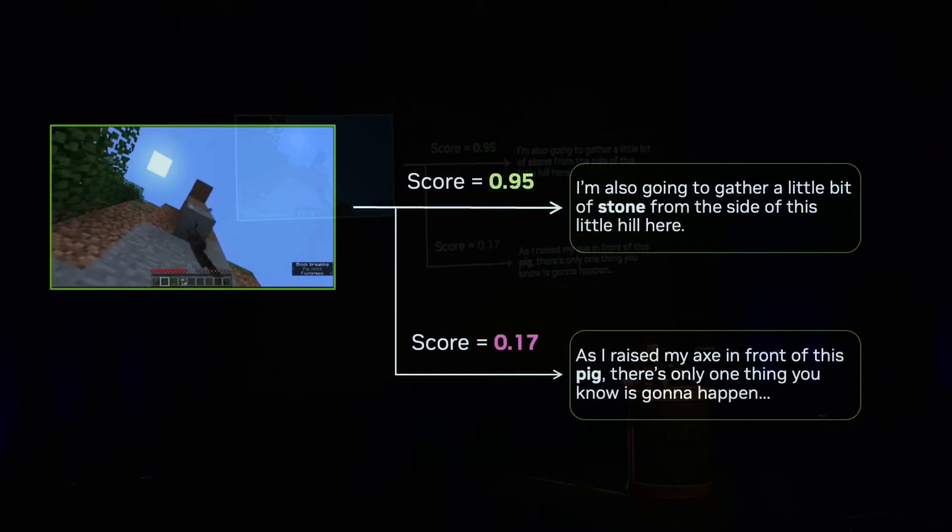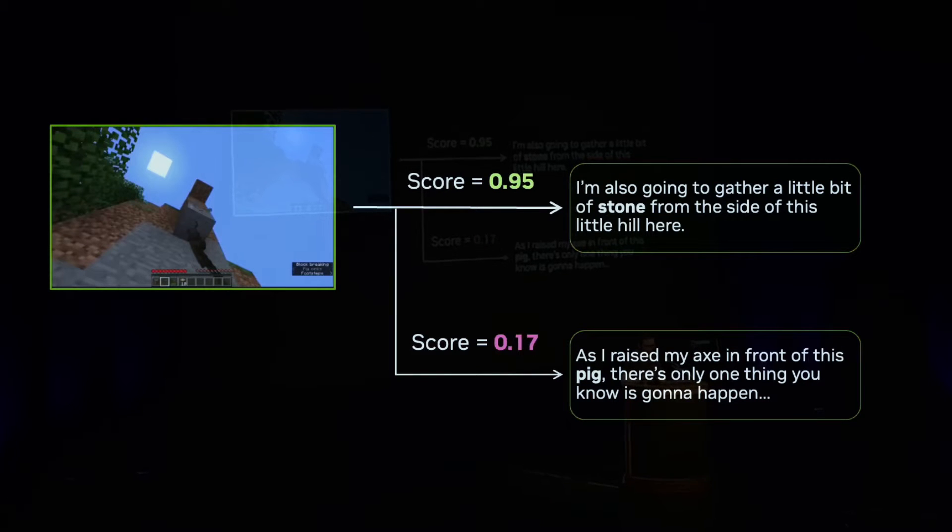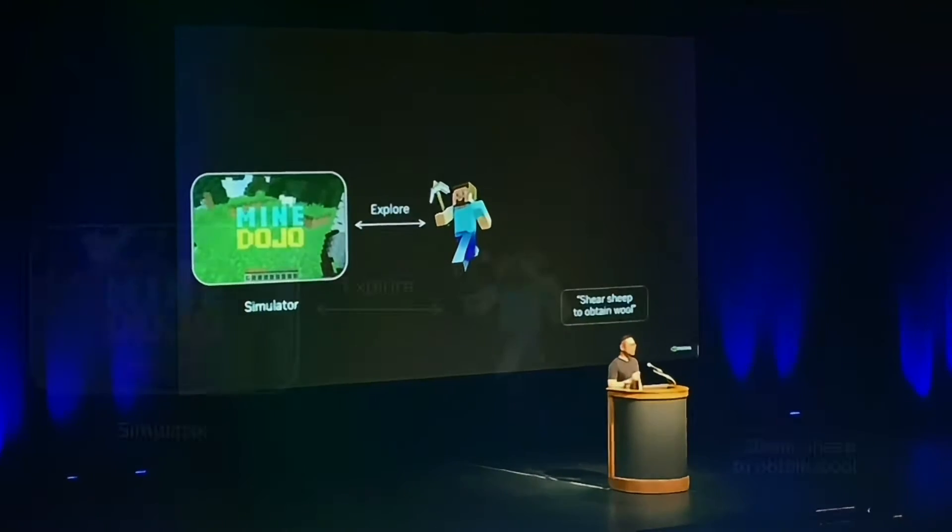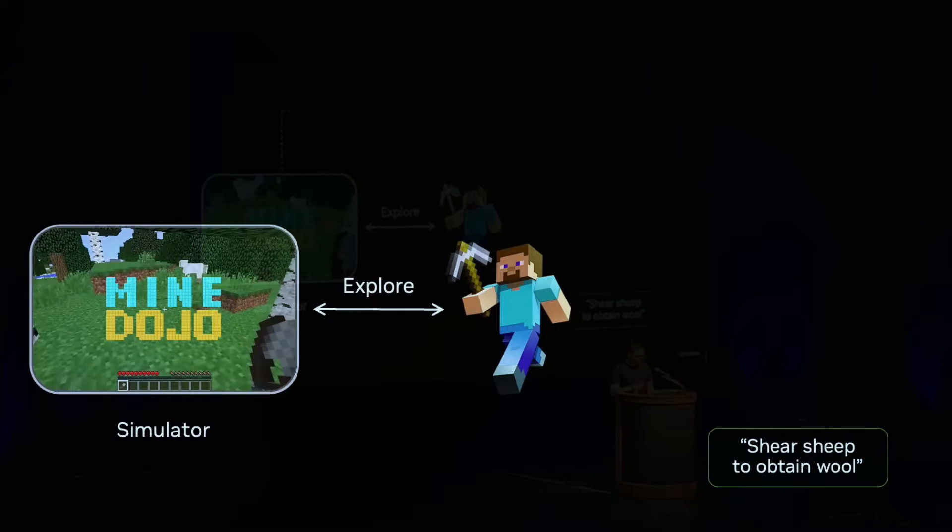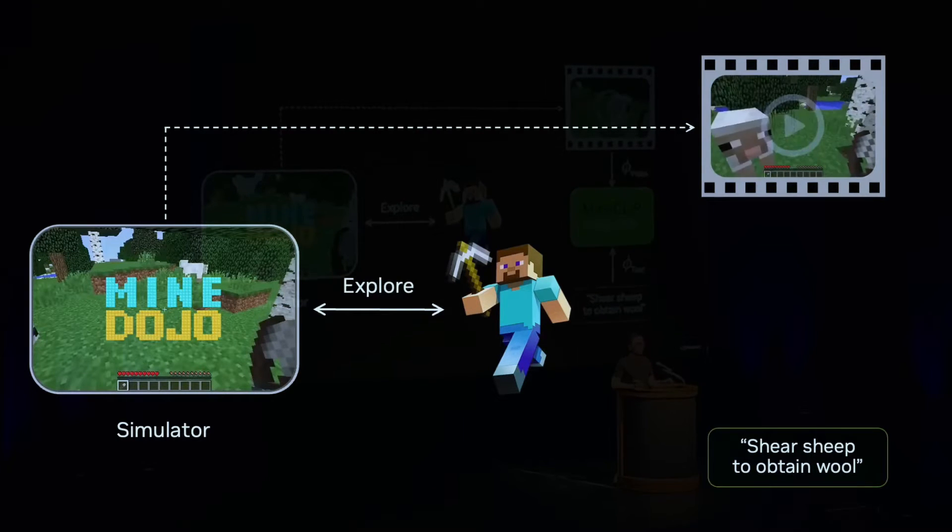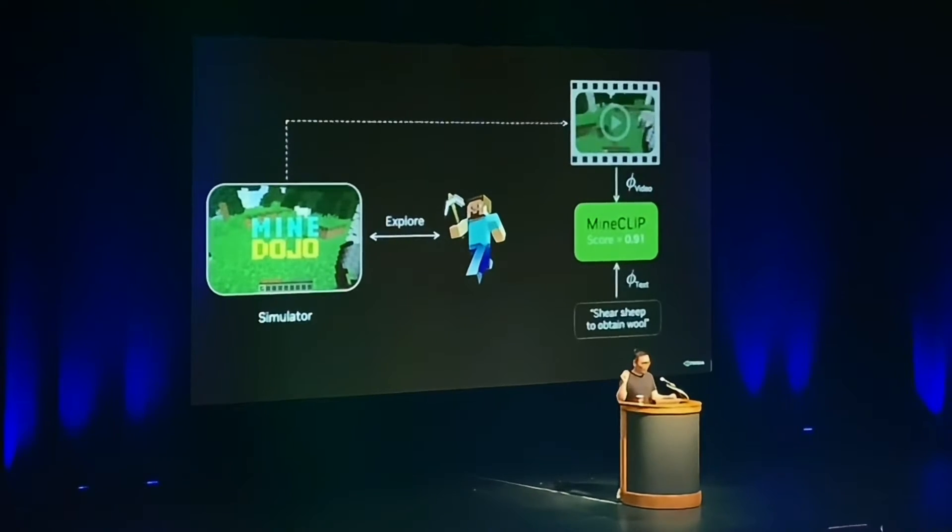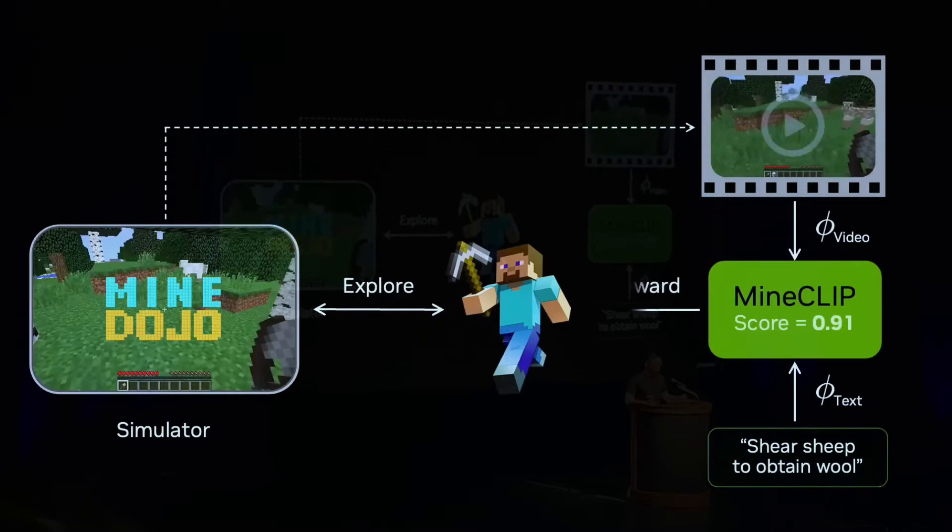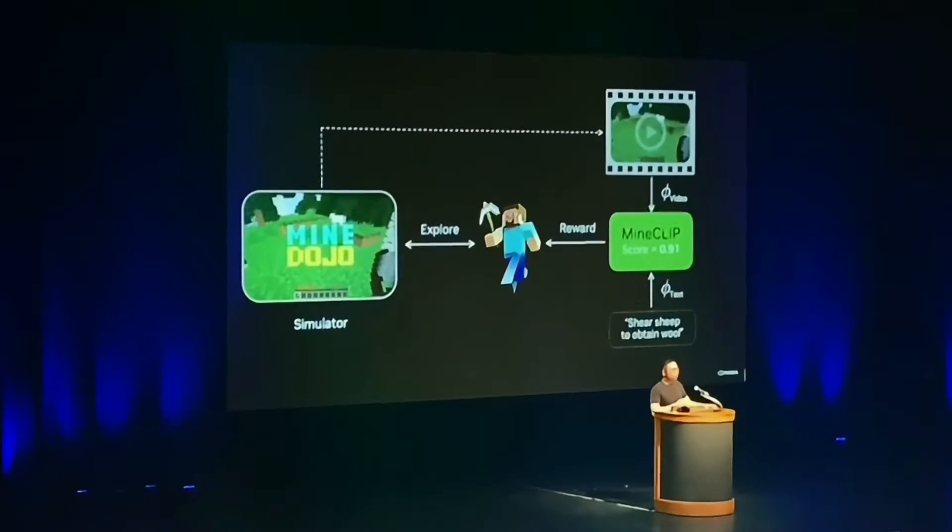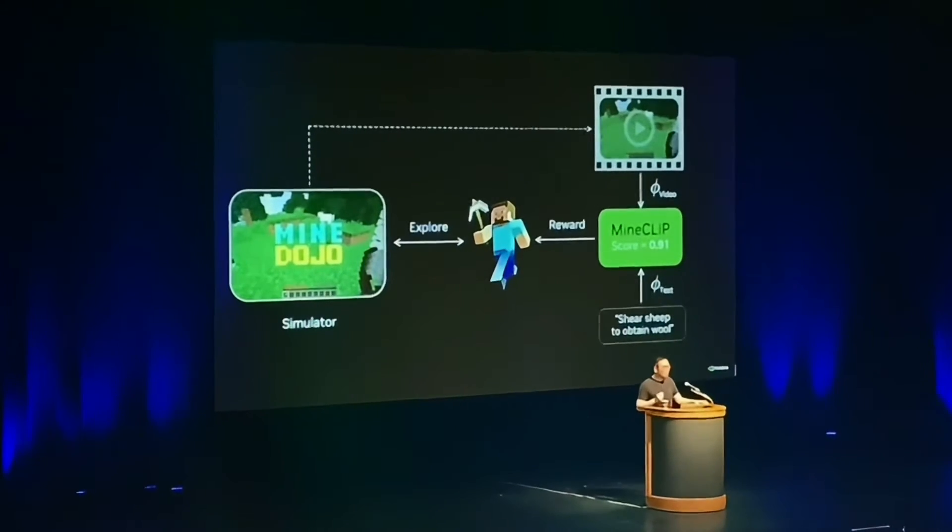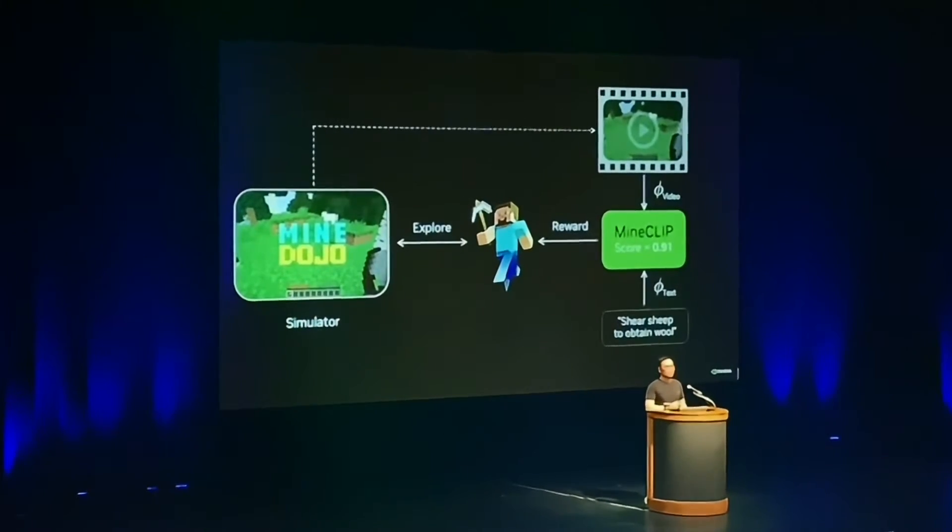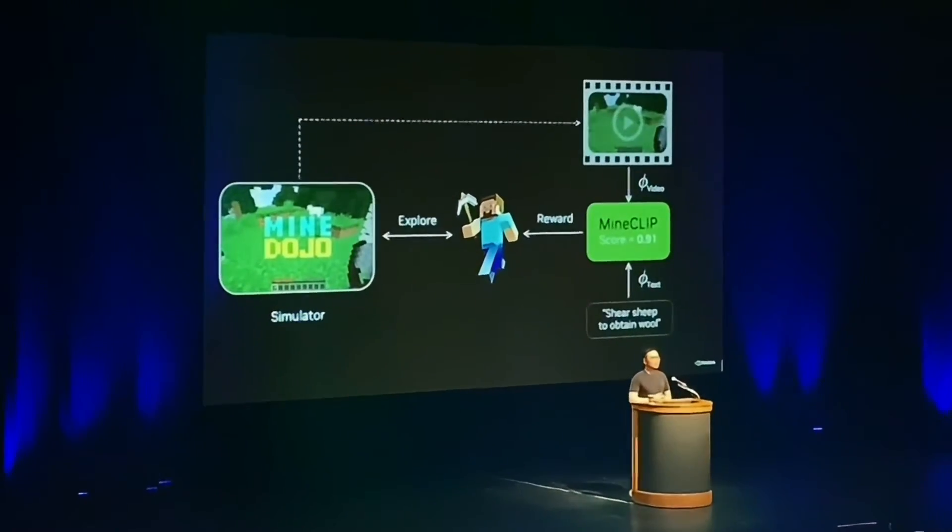Intuitively, MindClip learns the association between the video and the transcript that describes the action in the video. Let's see MindClip in action. Here's an agent. The task is written in natural language: shear sheep to obtain wool. As the agent explores, it generates a video snippet, which is then encoded and sent to the MindClip model to compute a score. The higher the association is, the higher the score is. That becomes the reward function to any reinforcement learning algorithm. If this looks familiar, that's because it's essentially reinforcement learning from human feedback or RLHF in Minecraft. RLHF is the cornerstone algorithm that made ChatGPT possible, and I believe it's also going to play a big role in building generalist agents.